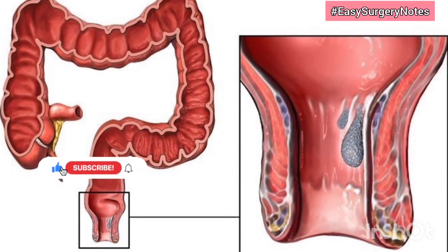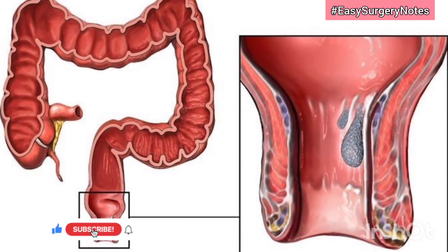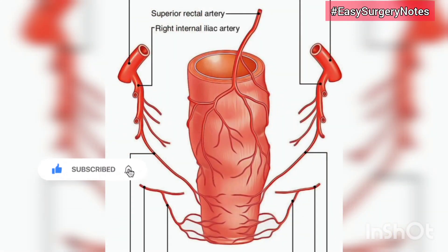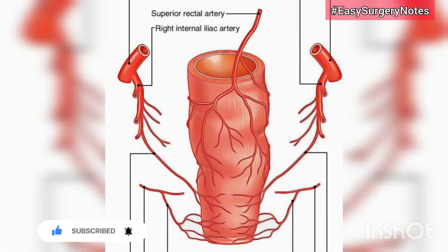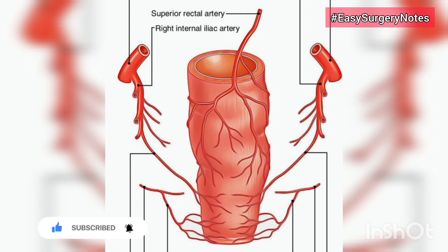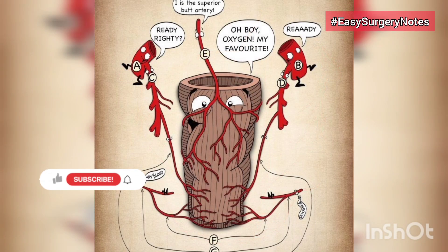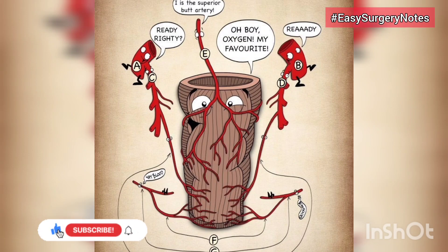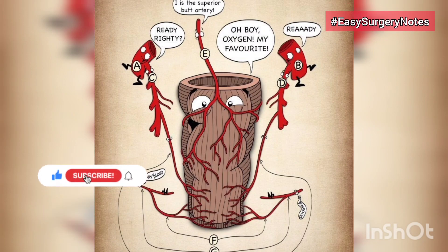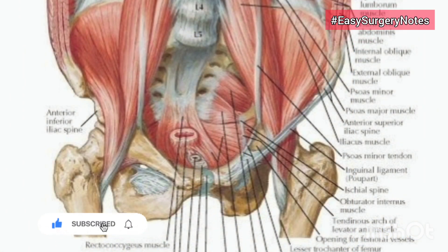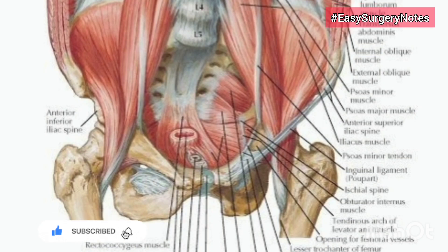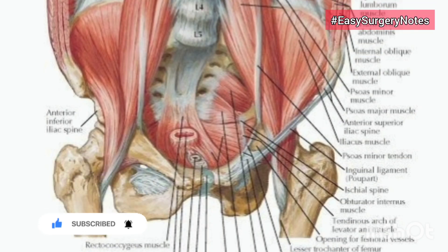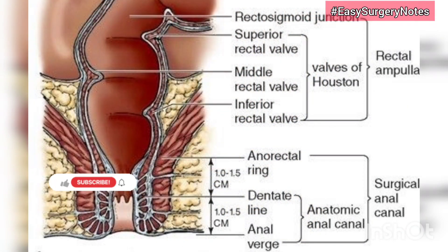Musculature of the anal canal — anal sphincters. Internal anal sphincter: formed by thickened circular muscle fibers and is involuntary. It is 2.5 centimeters long and 2.5 millimeters thick. It surrounds the upper three-quarters of the anal canal, from the upper part down to the white line of Hilton. In the formation of fissure and other anal conditions, the spasm and contraction of this muscle plays an important role.